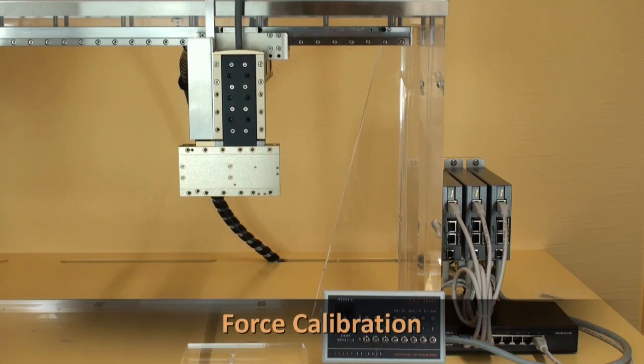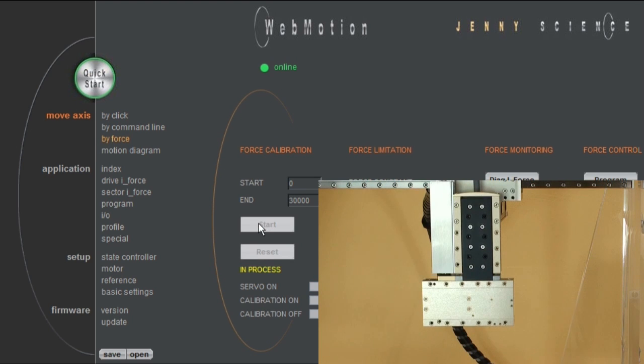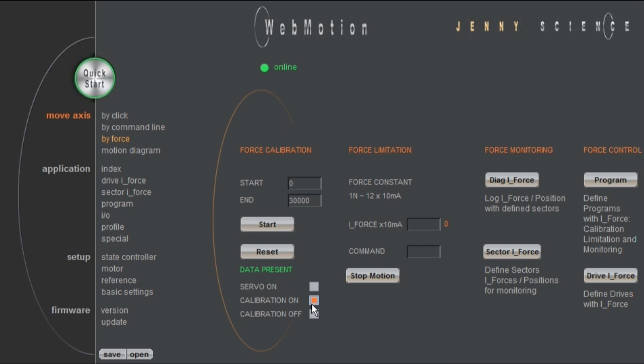Before using the force functions, we need to run the patented function force calibration. We will demonstrate this with our web browser user interface called WebMotion, where we start the force calibration process. It compensates all the undesired forces like the magnetic cogging forces, the friction forces, and the application's payload in case of a vertical installation.